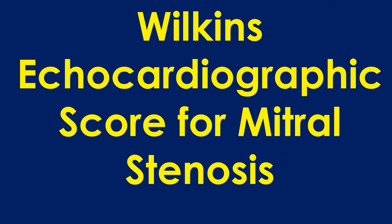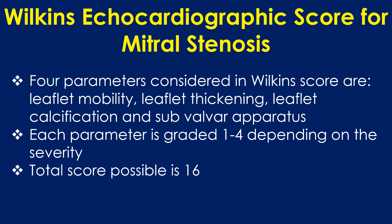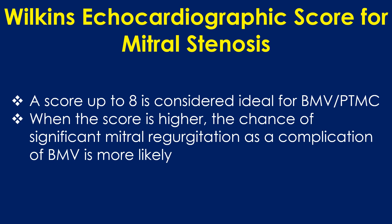Wilkins' echocardiographic score for mitral stenosis is useful for deciding whether the valve is suitable for balloon mitral valvotomy. The score was developed based on the first 22 patients who underwent balloon mitral valvotomy at their centre. The four parameters considered in the Wilkins' score are leaflet mobility, leaflet thickening, leaflet calcification, and subvalvar apparatus. Each parameter is graded 1 to 4 depending on severity, giving a total possible score of 16. A score up to 8 is considered ideal for BMV. When the score is higher, the chance of significant mitral regurgitation as a complication of BMV is more likely.